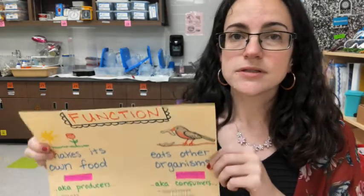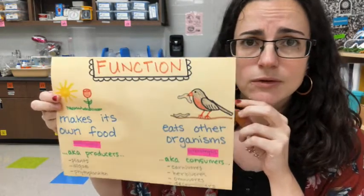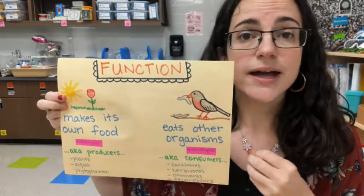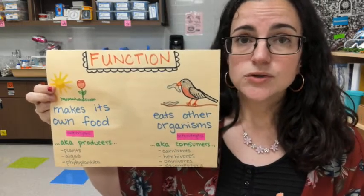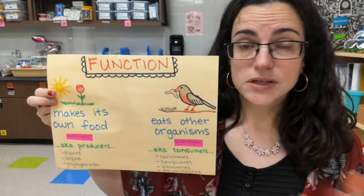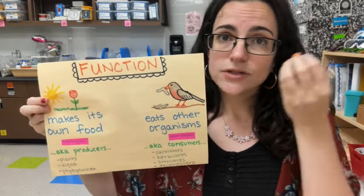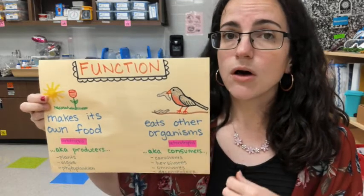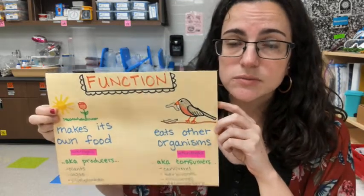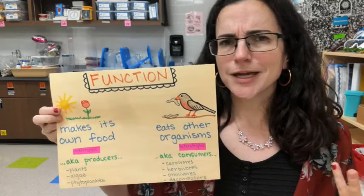Now what do I mean by function? Well, think about how that living organism has to gain energy by eating something or getting energy by a different way. Some living organisms do not eat anything — they have to rely on something to get energy, such as our plants. They take light energy from the sun and create their own food. We would call these types of living organisms autotrophs, also known as producers.